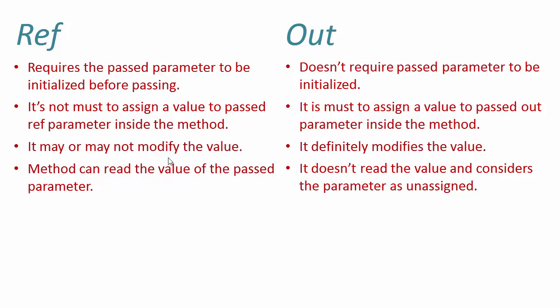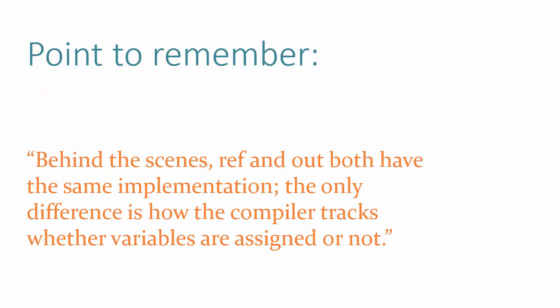The third point follows from the second: with ref, the parameter may or may not be modified — we can't be certain. But with out, we can be sure the value will definitely be modified and returned, which is its purpose. The fourth point is that with ref, the method can read the value of the passed parameter since it already has a value, whereas with out the parameter is expected to be unassigned. Behind the scenes ref and out have the same implementation; the difference is how the compiler tracks variable assignment.